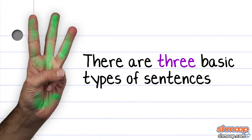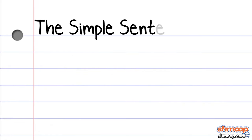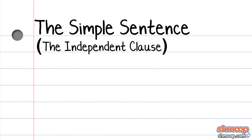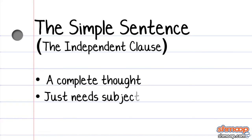There are three basic types of sentences. First, the simple sentence, also known as the independent clause. You can also think of it as a complete thought. So long as it's got a subject and a verb, you're all set.